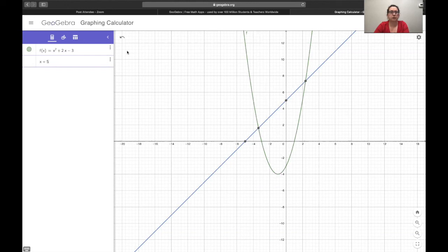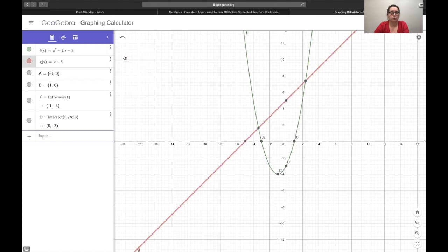So what we can do is click on these three dots and say special points and we can do that for both of them. So for instance, a is where the parabola intersects with the x-axis and that's negative three zero. B is at one zero. C is the vertex of the parabola and that's at negative one negative four. D intersects with the y-axis at negative three.